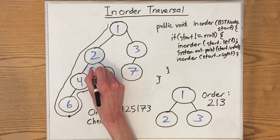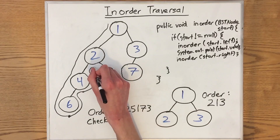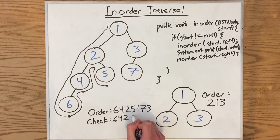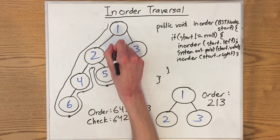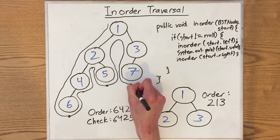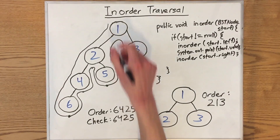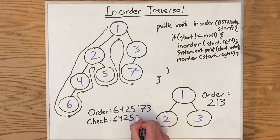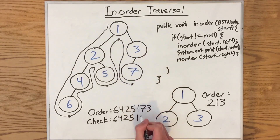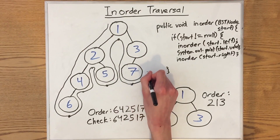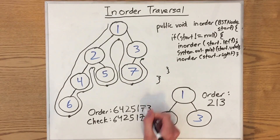Go up. Pass by under 2. That's a 2. Continue. 5. Go up as far as possible once again. Then we get up here, we print out the 1. Then we go down again. Pass by under 7. That's 7. Then we go up. Pass by under 3. And that is 3.